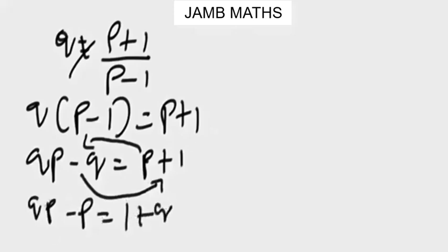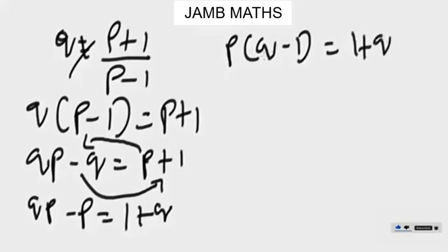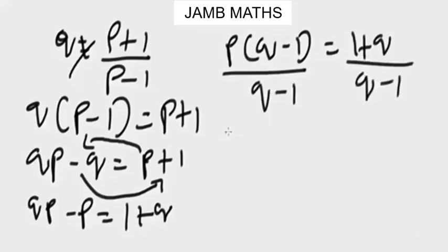Now when you factorize qp - p, I'm going to have p(q-1) = 1 + q. To make p the subject of the formula, divide both sides by (q-1). Therefore, our p...